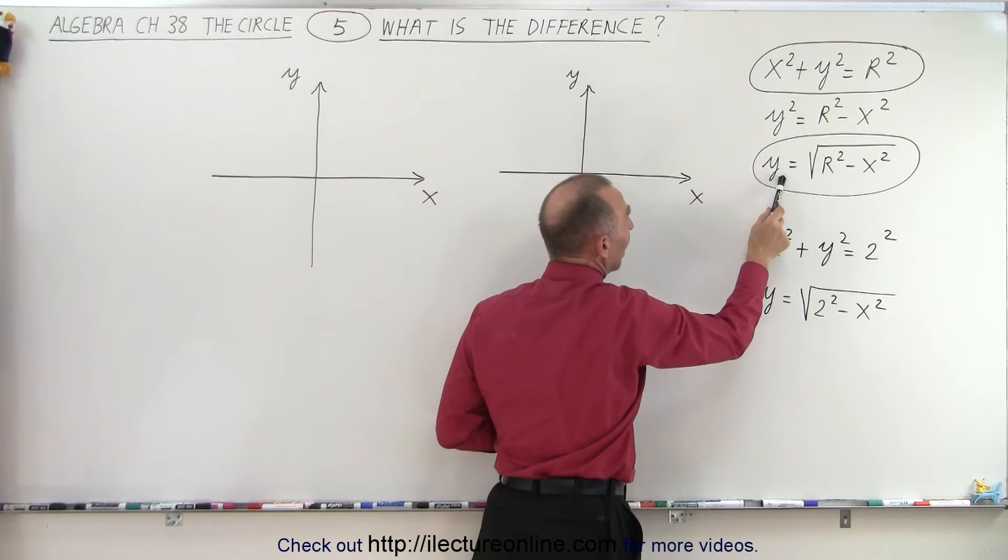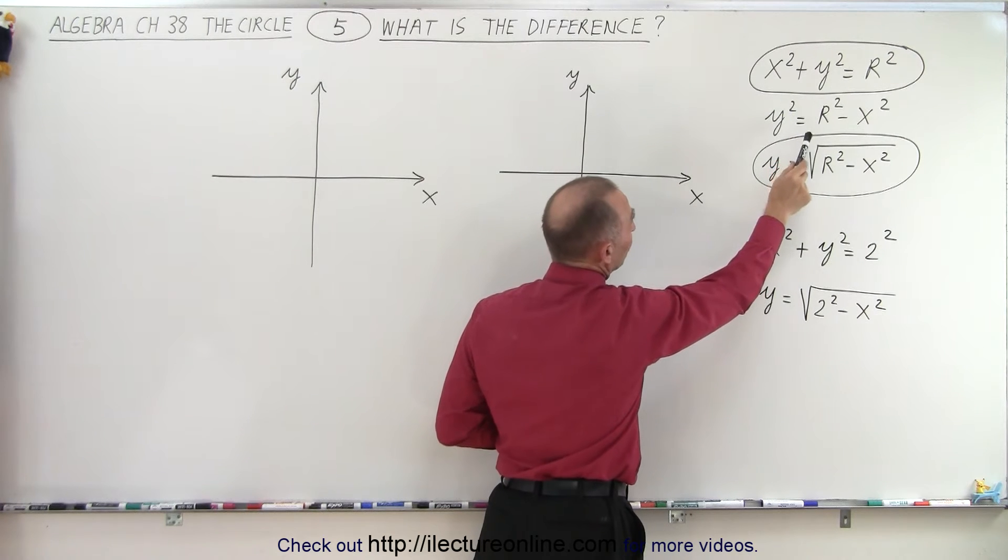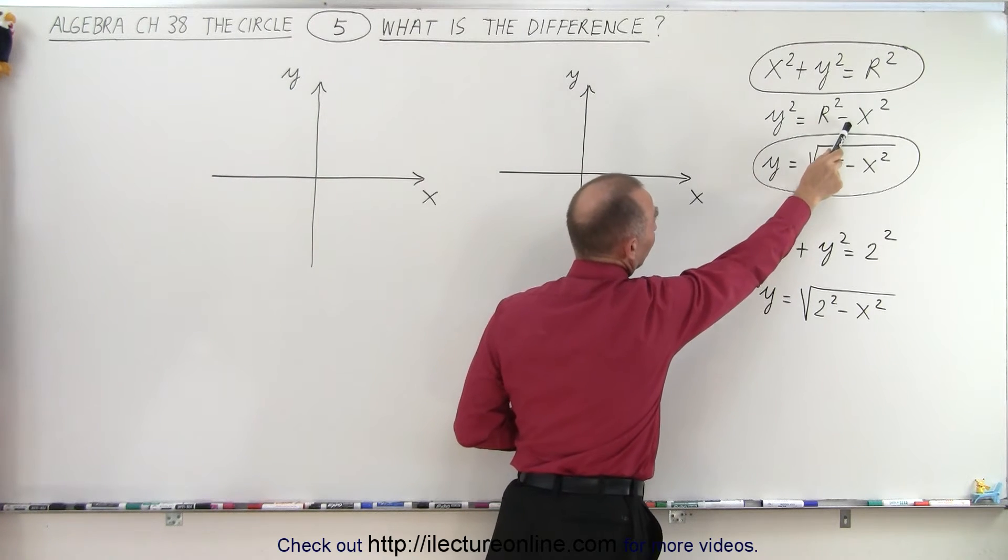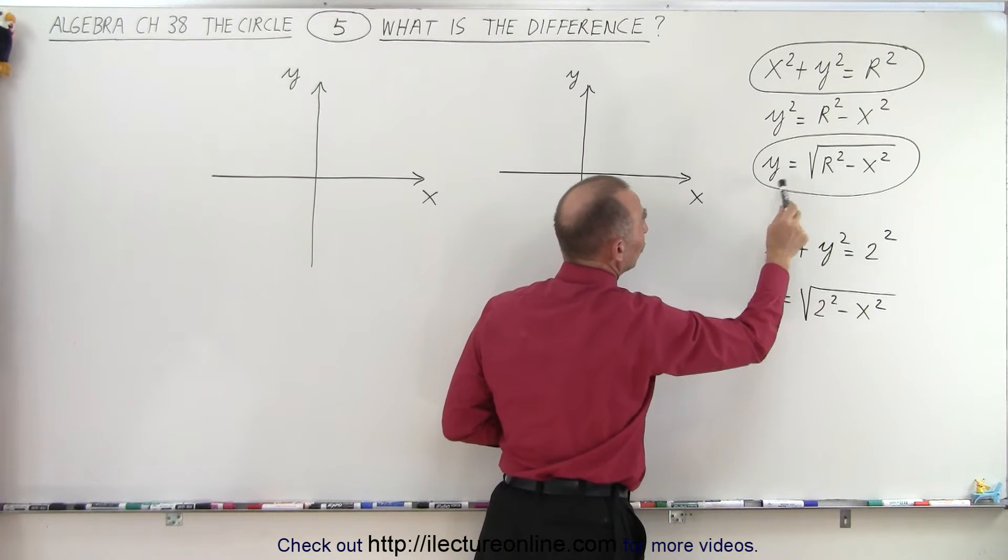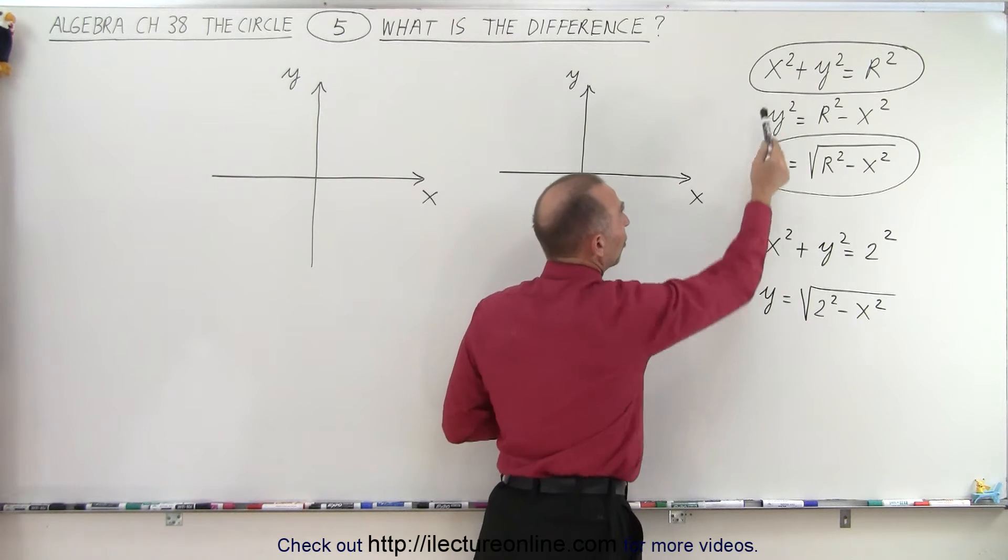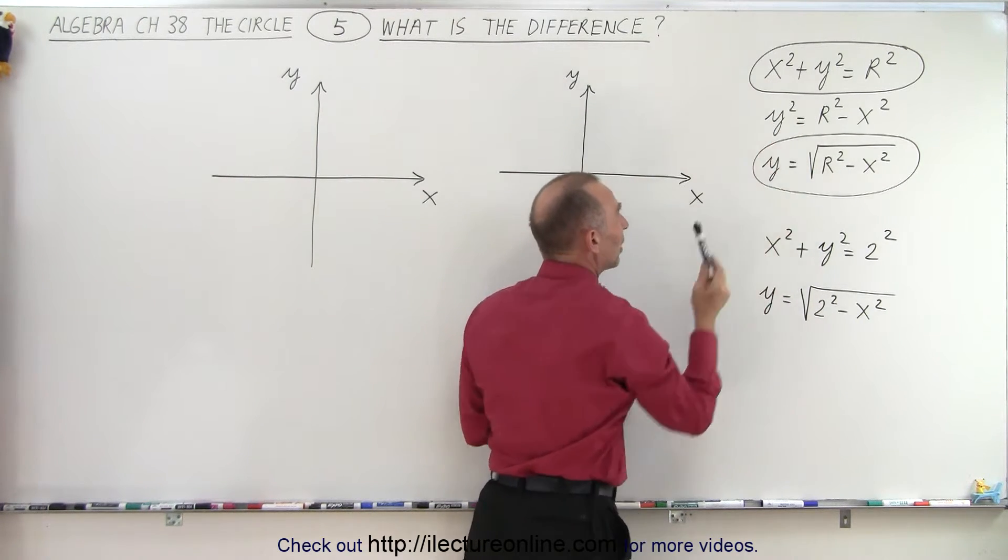if we solve that equation for y, first we put the x on the other side which becomes minus x squared. Then we take the square root of both sides. And the question is, what is the difference between these two equations?